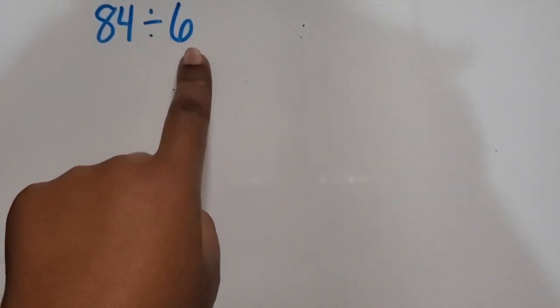We're going to divide a two-digit number by a one-digit number by using a pictorial model sharing base 10 blocks. We have 84 and we're going to divide it or share it into six equal groups.